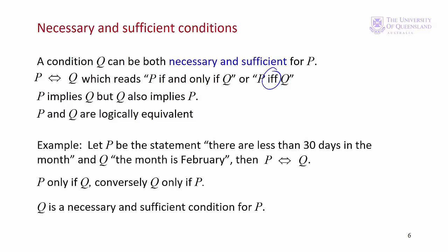If P is the statement there are less than 30 days in the month, and Q the statement the month is February, then P is equivalent to Q. P only if Q, and conversely Q only if P. Q is a necessary and sufficient condition for P, and vice versa. So saying there are less than 30 days in the month is logically equivalent to saying the month is February.